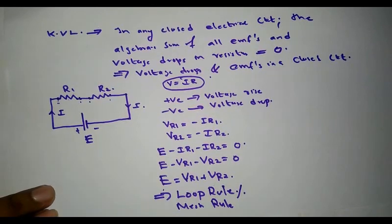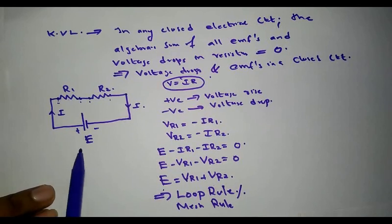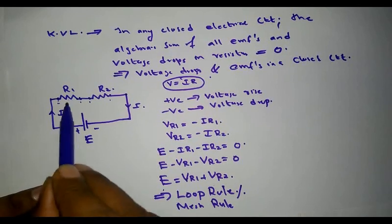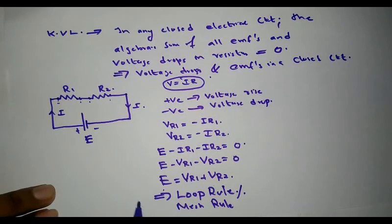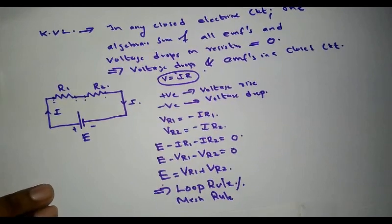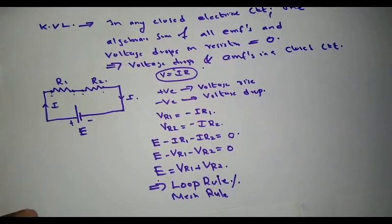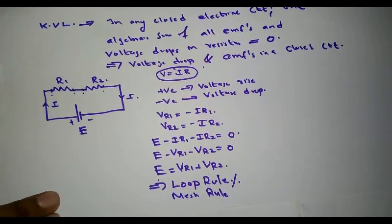According to the statement, in a closed electrical circuit or a mesh, the algebraic sum of all EMFs and voltage drops in resistors is equal to zero. This can also be represented as: the sum of EMFs equals the sum of voltage drops across the various resistors in a closed circuit.